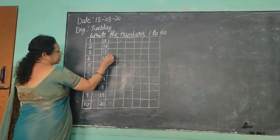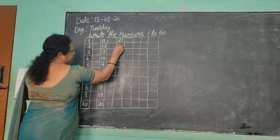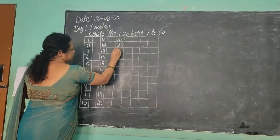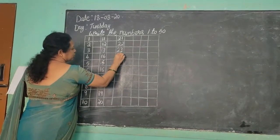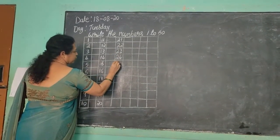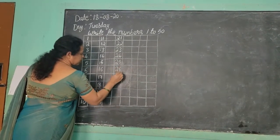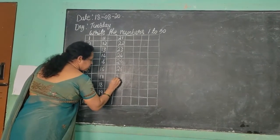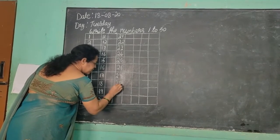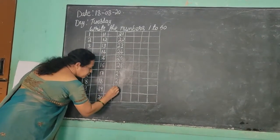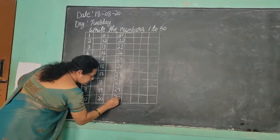Now view one box and write. 2, 1 — 21. 2, 2 — 22. 2, 3 — 23. 2, 4 — 24. 2, 5 — 25. 2, 6 — 26. 2, 7 — 27. 2, 8 — 28. 2, 9 — 29. 3, 0 — 30.